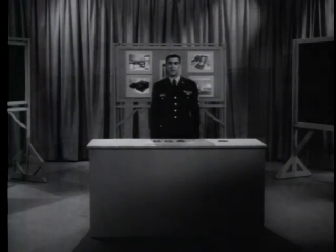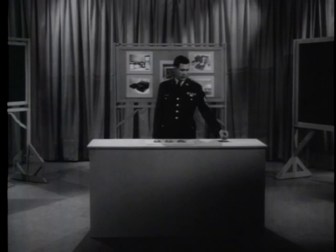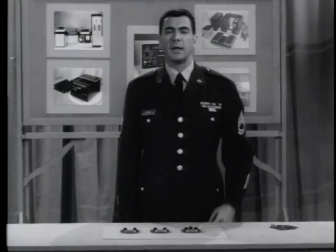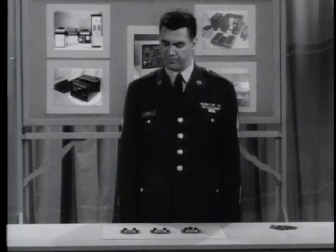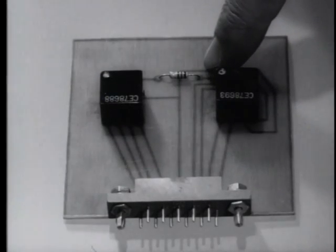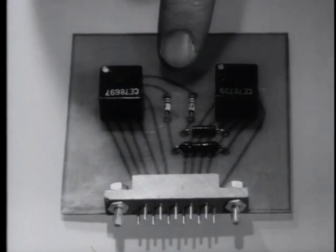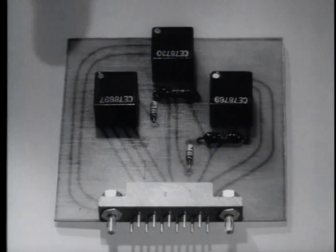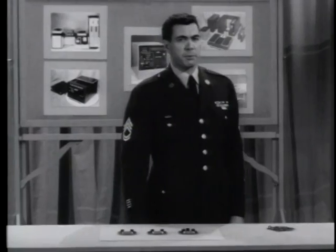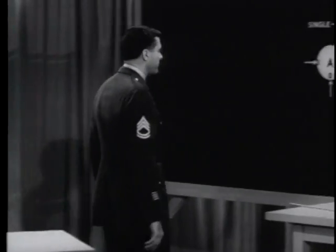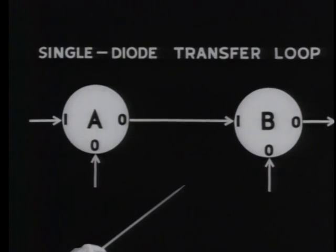In the first film of this series, we examined the basic properties of magnetic cores. In this film, we'll be dealing with three types of core transfer loops: the single diode transfer loop, the split winding transfer loop, and the inhibit transfer loop. The simplest of the three transfer loops has already been described — the single diode transfer loop.